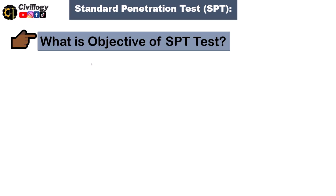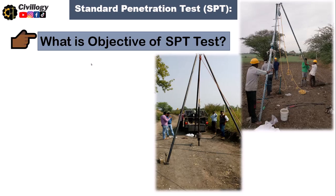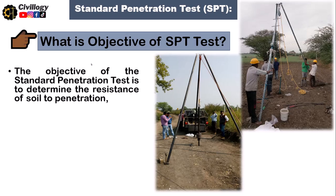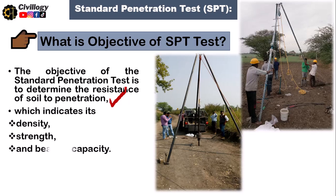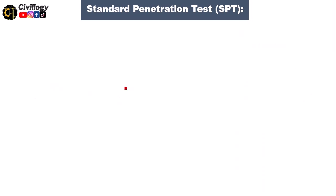Now let us discuss the objective of the SPT test. Here are some pictures showing engineers getting a soil sample, which will be calculated against the SPT N value. The objective of the standard penetration test is to determine the resistance of soil to penetration — the harder the soil, the lesser the penetration — and it indicates the density, strength, and bearing capacity of the soil.